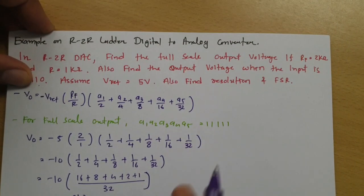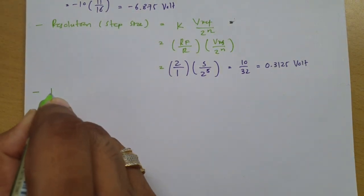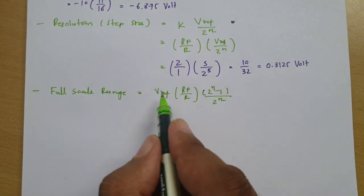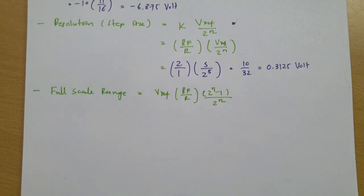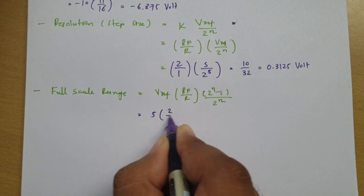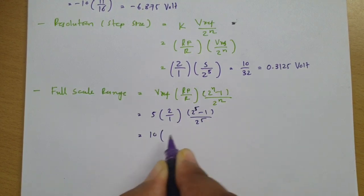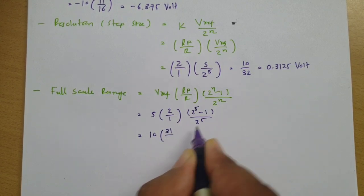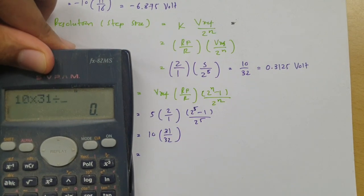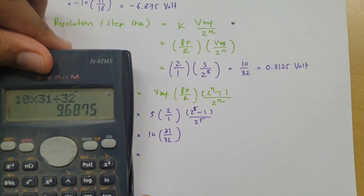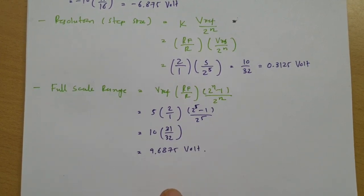One more question is to find the full scale range. The formula for full scale range is V_ref into gain (RF by R) into (2^N minus 1) divided by 2^N. Placing values: 5 into (2/1) into (2^5 minus 1) divided by 2^5. This is 10 into (32 minus 1), which is 31 divided by 32. Solving this gives a full scale range of 9.6875.